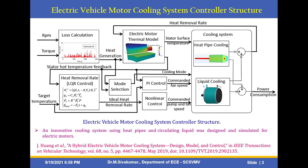Speed and torque are also calculated. Using Simscape modeling, you can calculate the speed, torque, and temperature of the electric motor with a thermal model. The heat removal rate is also calculated. There is a separate cooling system with heat pipe cooling and liquid cooling. Two modes of operation are available: cooling mode and without cooling mode. The target temperature is set with a PI controller, and fan speed is commanded using nonlinear control. Pump and fan speed are commanded using MATLAB Simscape software, with cooling system using heat pipes and circulating liquid.